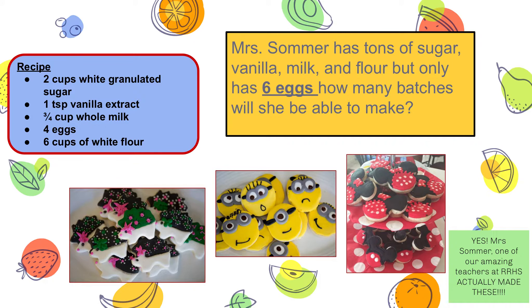So here is my recipe, and yes, this is the actual recipe I used to make these cookies. The recipe is 2 cups white granulated sugar, 1 teaspoon vanilla, 3 fourths cup whole milk, 4 eggs, and 6 cups of white flour. So I have a ton of sugar, vanilla, milk, and flour, but only have 6 eggs. So how many batches can I make?